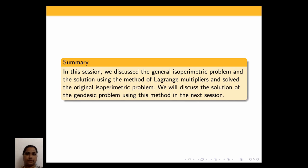In this session we have discussed the general isoperimetric problem and its solution using the method of Lagrange multipliers, and solved the original isoperimetric problem showing the maximizing curve is a circle. We will discuss the solution of the geodesic problem using this method in the next session. Thank you.